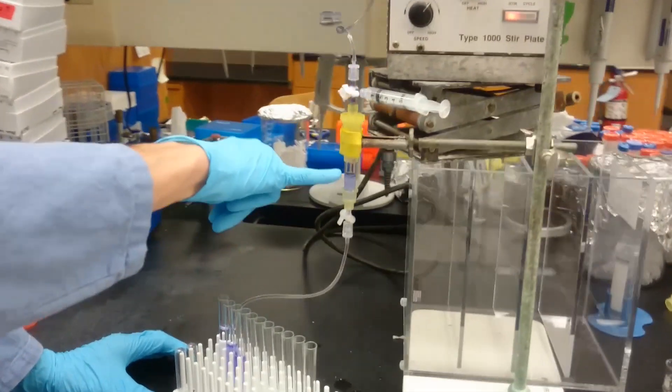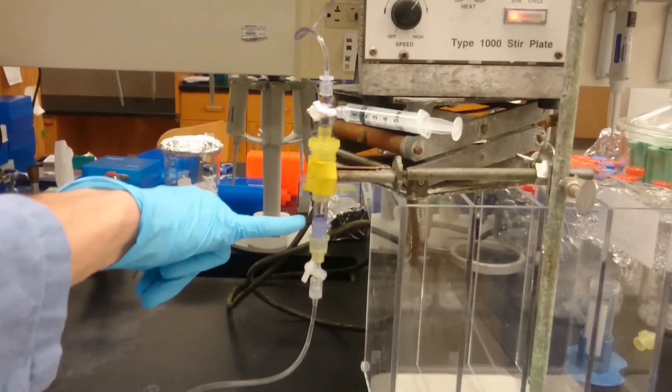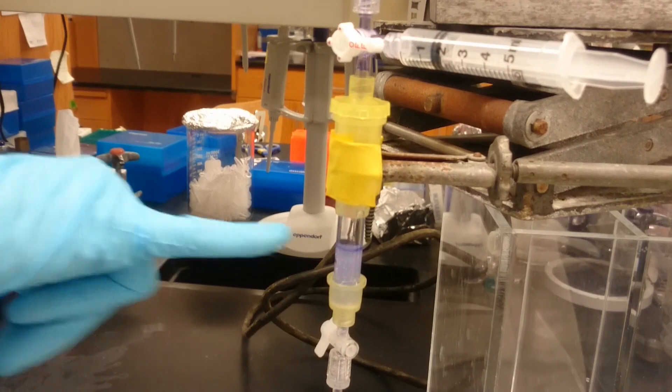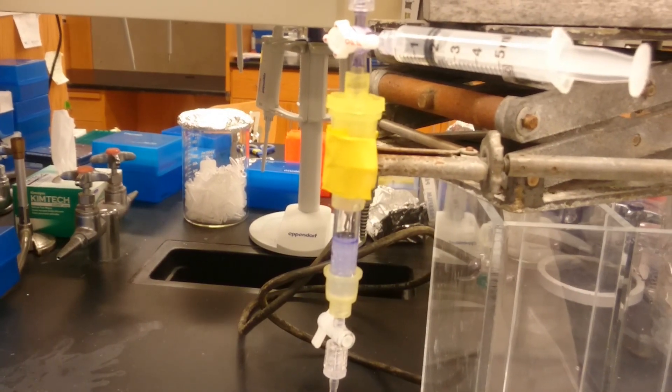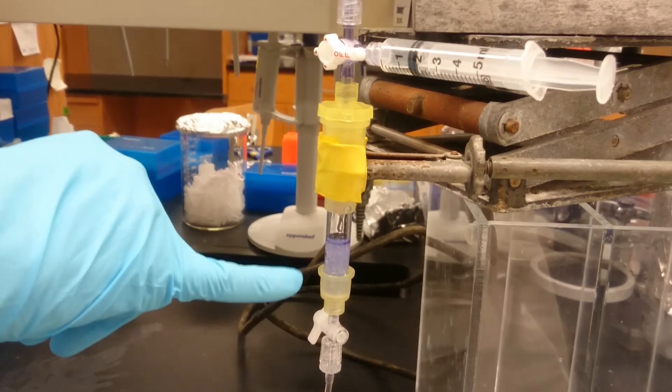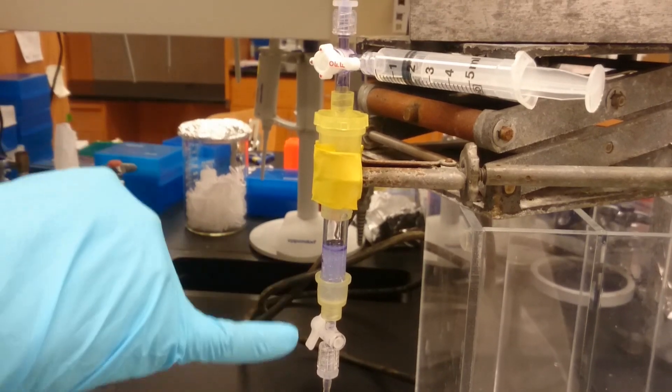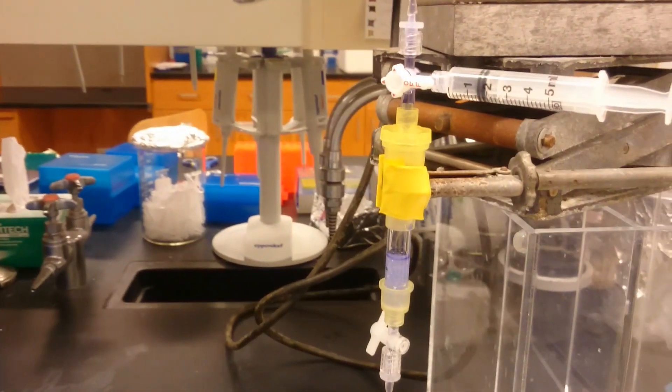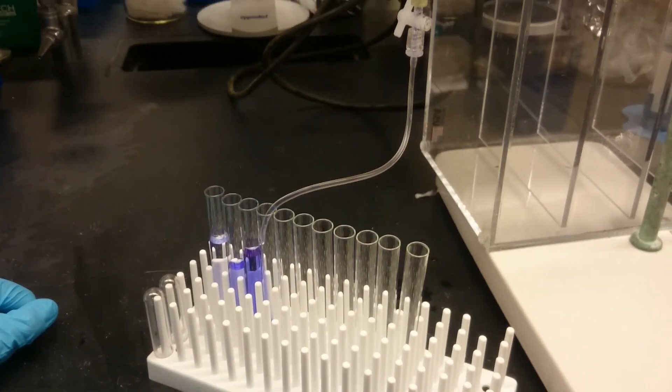And if you take a look down here, you can see that I've got this going at a pretty good clip. Your column will probably not run this fast. I'm using glass beads, like I said, just for demonstration purposes, but a real resin would probably have more resistance than this and it would flow a little bit slower. But overall, you get the idea.